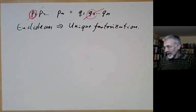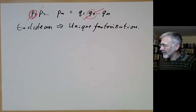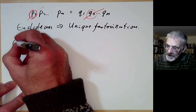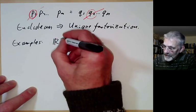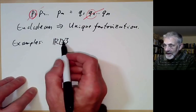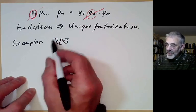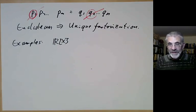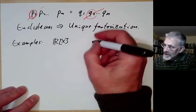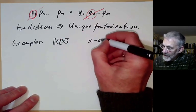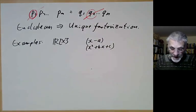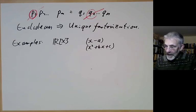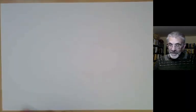This is completely useless unless we have good examples of Euclidean rings. One example is the real polynomials R[x], which has division with remainder. So every polynomial can be written in an essentially unique way as a product of irreducible polynomials. Over the reals, irreducible polynomials are all either linear or quadratic (x² + bx + c), except sometimes those factor as a product of two linear factors.